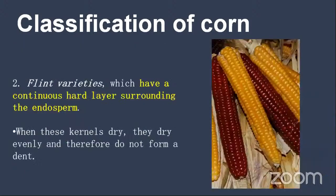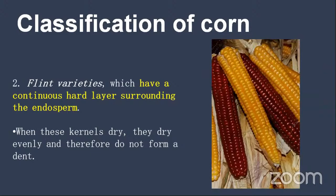The second variety is the flint variety. In flint corn, there is no dent visible. This is because the entire outer layer of the kernel is covered with horny endosperm — the hard endosperm. When these grains are dried, they dry evenly, and therefore there is no dent on their outer surface. That is why these are known as flint varieties.